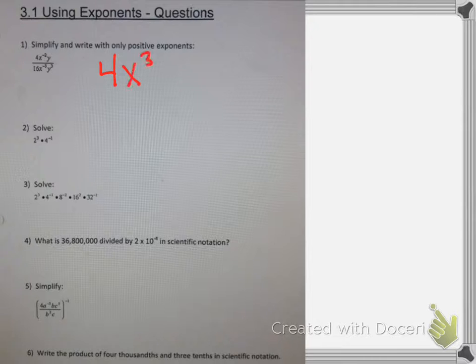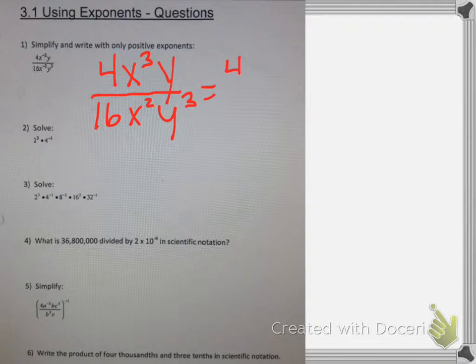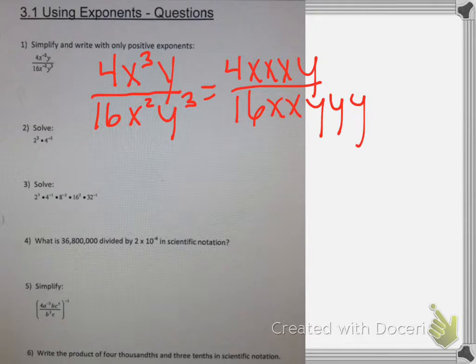So I can rewrite this as 4x cubed times y over 16x squared times y cubed. This gets rid of the negative exponents. Now we need to simplify. If I write these out, the x cubed is just 3 x's and x squared is 2 x's, the y cubed is 3 y's. I have 4 over 16.